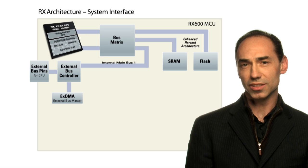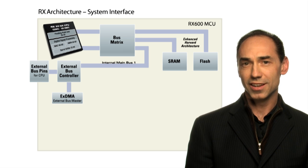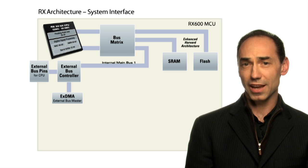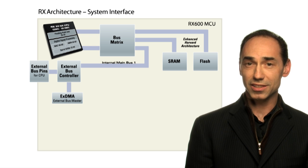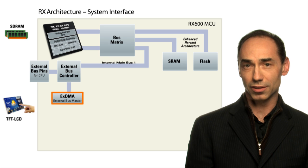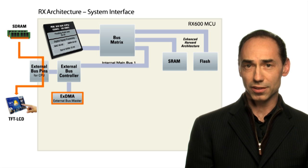The RX 600 uses an enhanced Harvard architecture to connect to internal 100 MHz flash and internal 100 MHz SRAM. There is also a 32-bit external bus connection through MainBus 1, and there is even an external DMA controller that can act as a bus master for the external bus, greatly offloading the CPU.